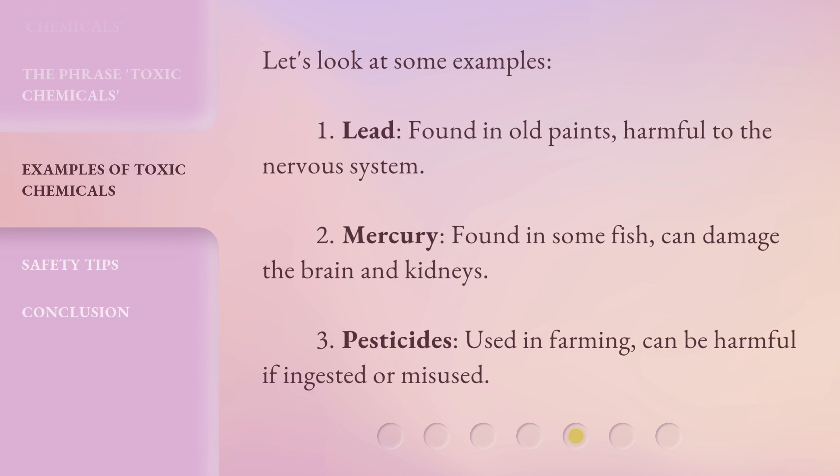Let's look at some examples. 1. Lead, found in old paints, harmful to the nervous system. 2. Mercury, found in some fish, can damage the brain and kidneys. 3. Pesticides, used in farming, can be harmful if ingested or misused.